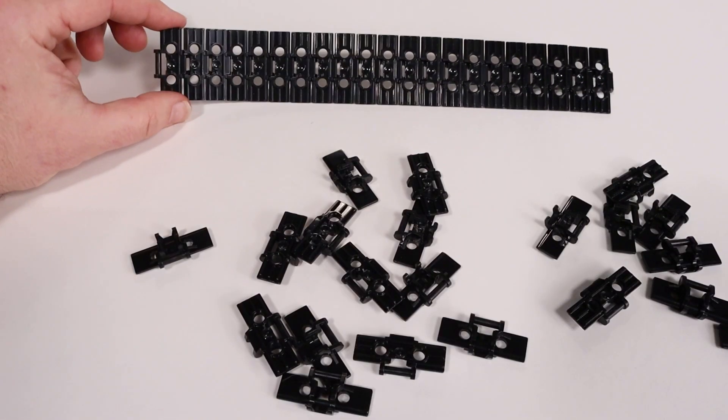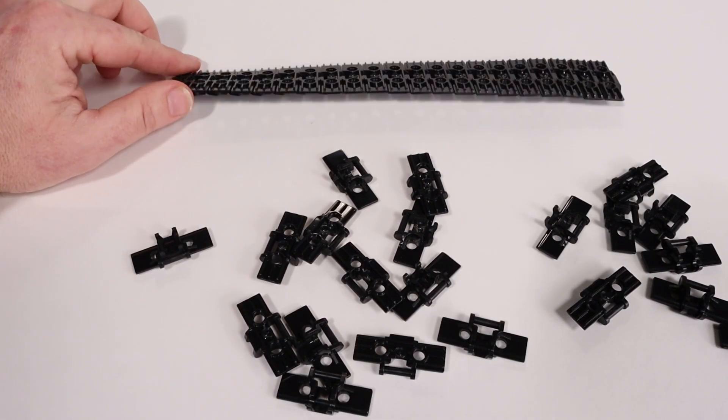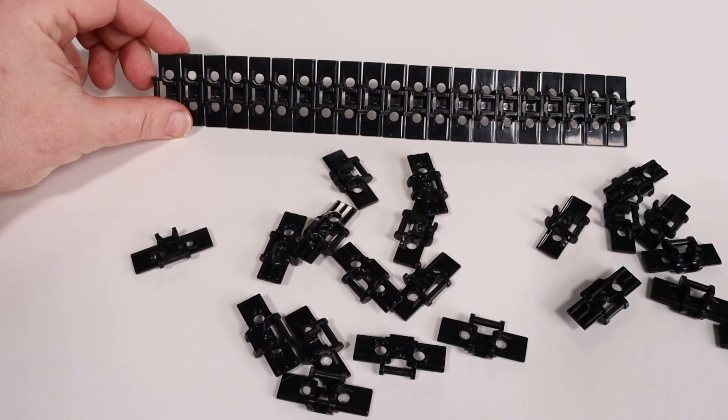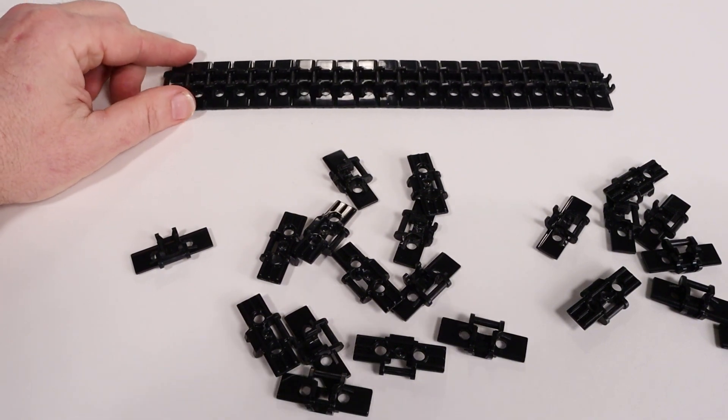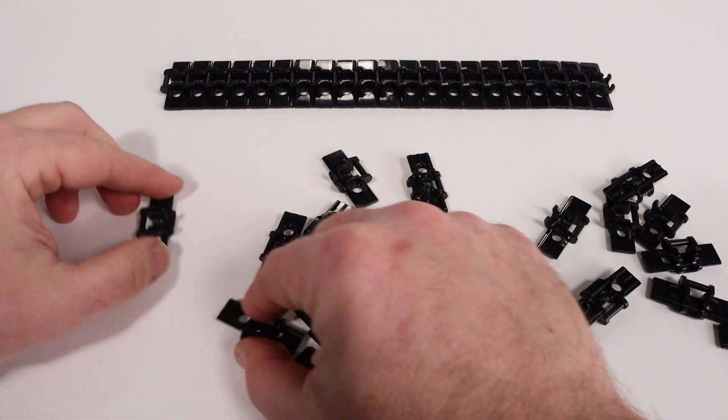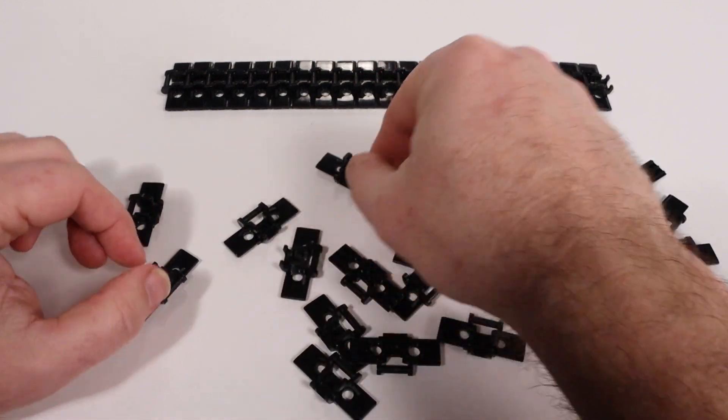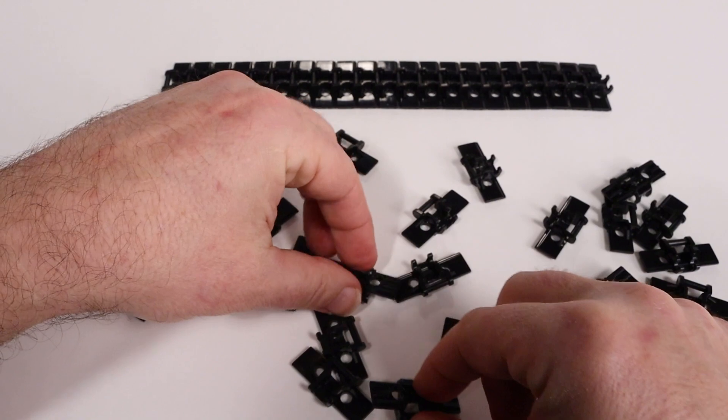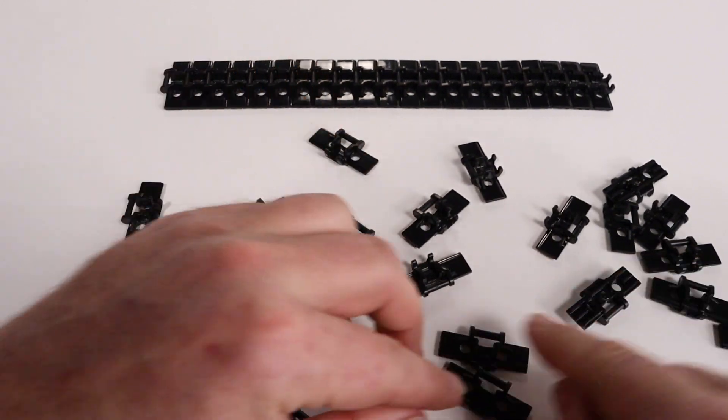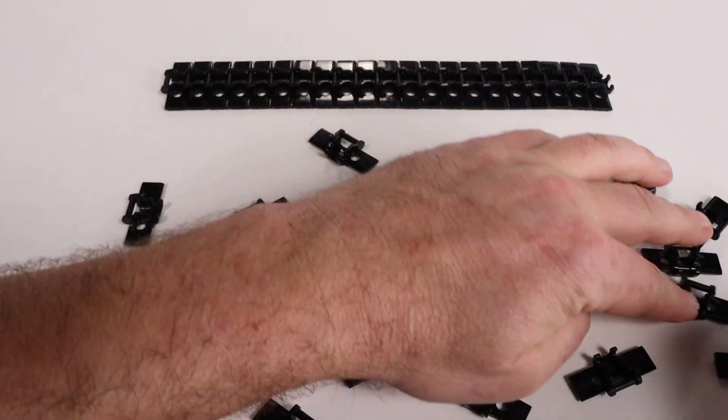Now comes the fun part, the tank treads. On top, you can see what a finished assembled tank track looks like. It's made up of 21 individual pieces. Start with by sorting these pieces. Make sure to place them flat side down.